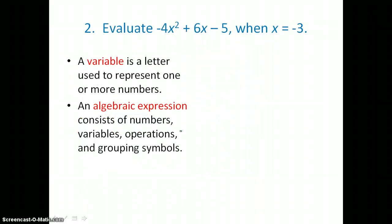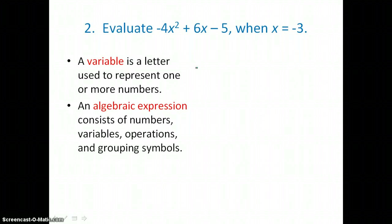Our second example is to evaluate negative 4x squared plus 6x minus 5 when x equals negative 3. This is an algebraic expression, and the difference between an algebraic expression and a numerical expression is that variable x. We want to replace x with negative 3, so let's do that first — wherever we find x, we'll replace it with negative 3.